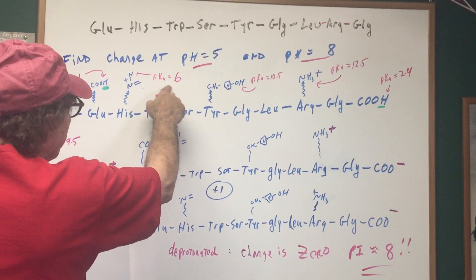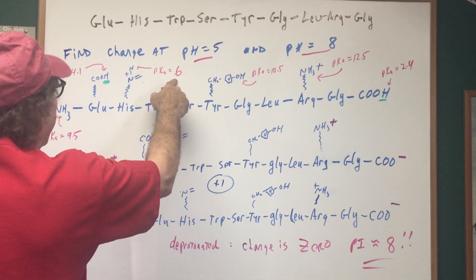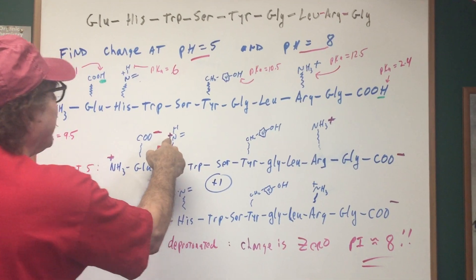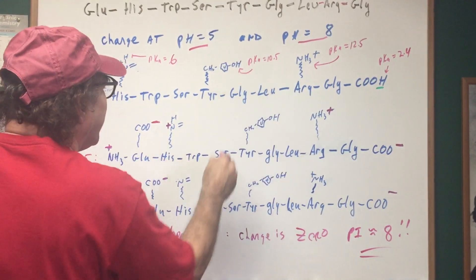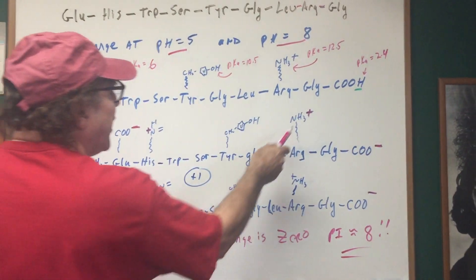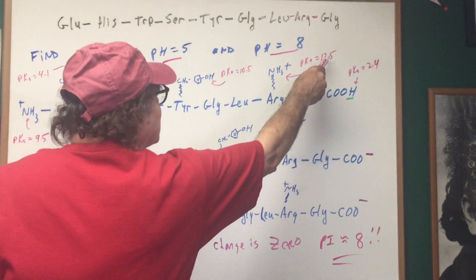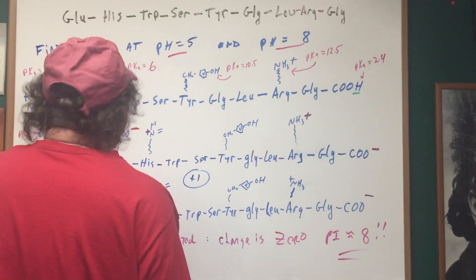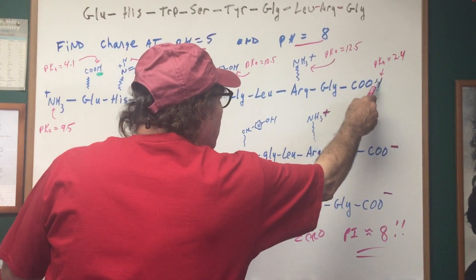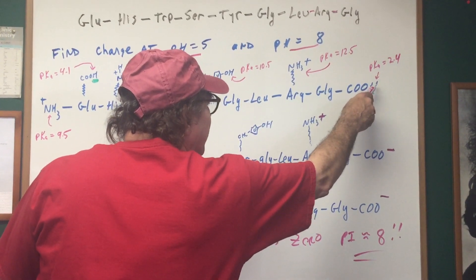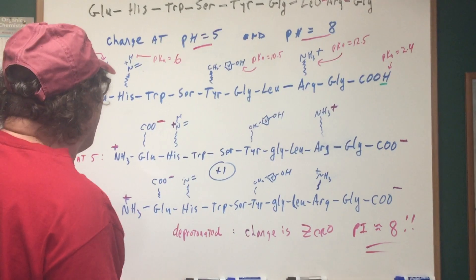Notice we haven't reached the PKA of histidine yet, so at five, it's still protonated. We don't do anything here. We don't do anything to arginine. Arginine, nothing much is going to happen till 12.5. And obviously at five, we've really deprotonated this. So it would be mainly in the COO minus form.